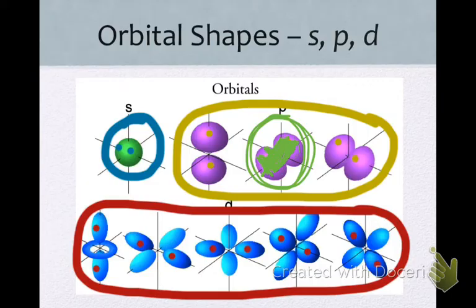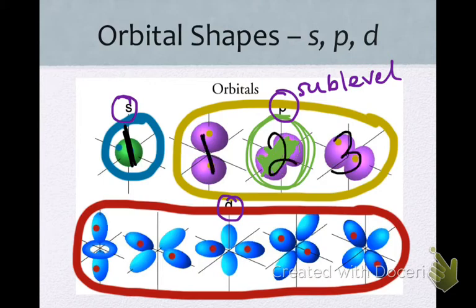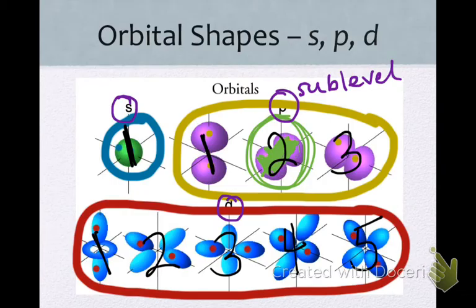So the idea to understand is that we have all of these different types of sublevels and we have different orbitals. So again, the S, the P, and the D refer to my sublevel. And then within each sublevel, I have my individual orbitals. So I have one orbital for S. I have one, two, three orbitals for P. And I have one, two, three, four, five orbitals for D. And then again, within each of these orbitals, I can hold a maximum of two electrons.